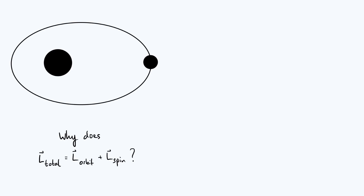What we're going to be interested in is the total angular momentum of the planet. To find that total angular momentum, you have to consider two separate contributions. Firstly, you've got the orbital angular momentum, which comes from the fact that the planet is moving around in this elliptical orbit about the star. But the planet may also be spinning about its own axis, just like the earth does — that's what's responsible for the day-night cycle on earth. Spinning is a type of rotation, and therefore spinning also gives rise to some angular momentum. So if we want the total angular momentum of our planet, we have to combine those two contributions.